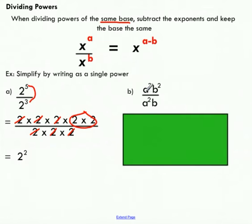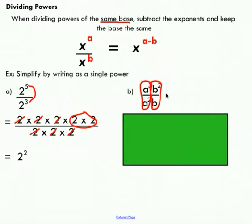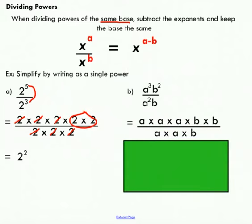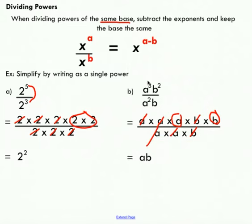In the second example for division, we don't have the same base across the whole fraction, but we do have pairs: a to the power of 3 over a squared, and b squared over b. Using the canceling method, I cancel a terms and b terms in pairs. I'm left with a times b. Using the exponent law: 3 minus 2 gives a to the power of 1, and 2 minus 1 gives b to the power of 1.